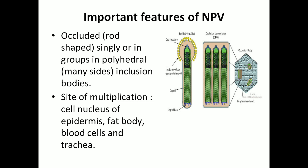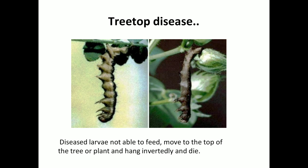Important features of NPV: it is rod-shaped and occurs singly or in groups within polyhedrin inclusion bodies, having many sites as you can see in the picture. The site of multiplication is in the cell nucleus of epidermis, fat bodies, blood cells, etc. The symptom is called treetop disease — the diseased larvae are not able to feed, move to the top of the tree or plant, hang inverted, and die. You can see the difference between the initial stage and final stage, including color change in the larvae.